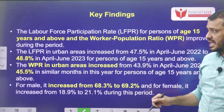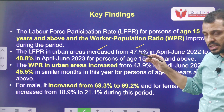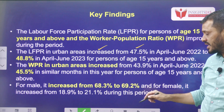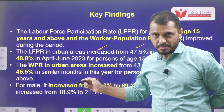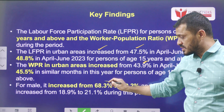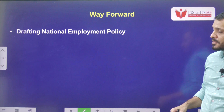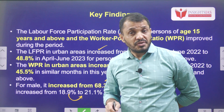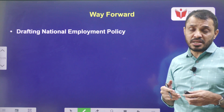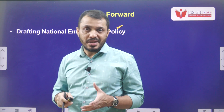Key findings of PLFS: labour force participation in the urban area increased from 47.5% in 2022 to 48.8%, meaning more people are ready to work. The Workers Population Rate in urban areas increased from 43.9% to 45.5%. For males, the work population ratio increased from 68% to 69%, whereas for females it increased from 18% to 21%. The way forward is that for better quality employment and to address employment inequalities, there is a need for the Government of India to come up with a comprehensive national employment policy to address various issues related to employment and unemployment.